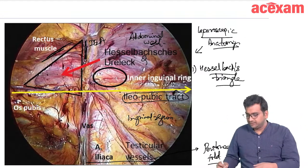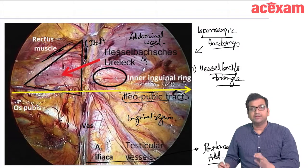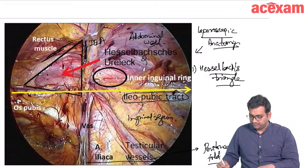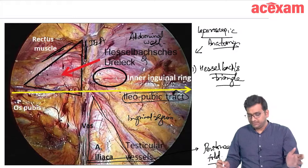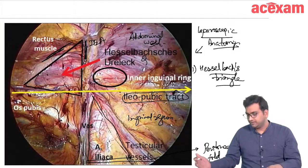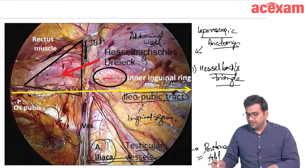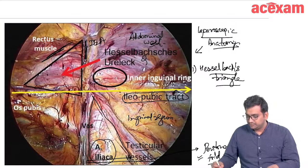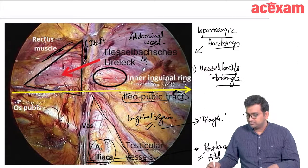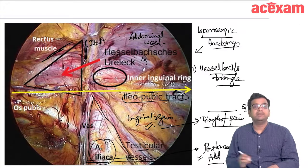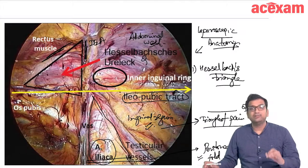The triangle of pain (yellow area in the diagram) is lateral to the triangle of doom. This laparoscopic anatomy — Hasselbach's triangle, triangle of doom, triangle of pain — is frequently asked in examinations.